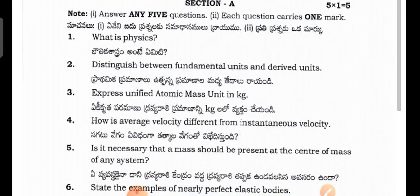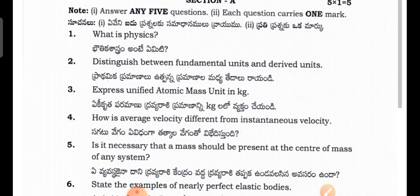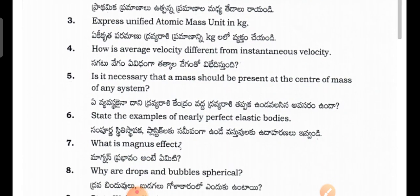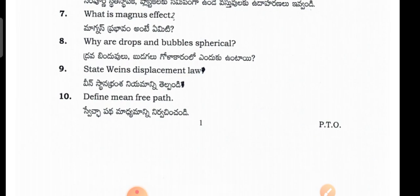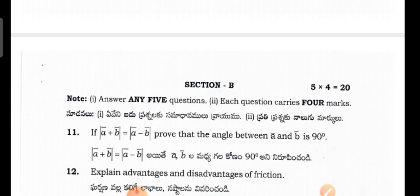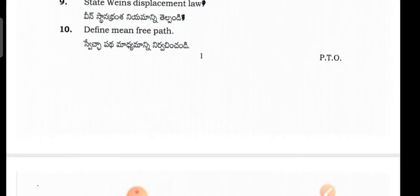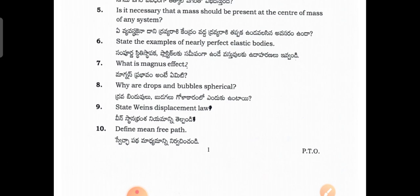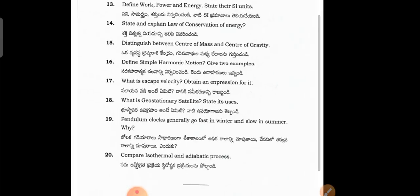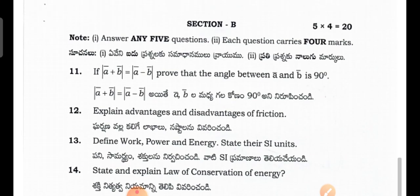See here, Section A. First question, second, third, fourth, fifth, sixth, seven, eight, nine, ten — only ten questions in Section A. If you want, you can take a screenshot. Next, we come into the Section B questions in physics for the bridge course.